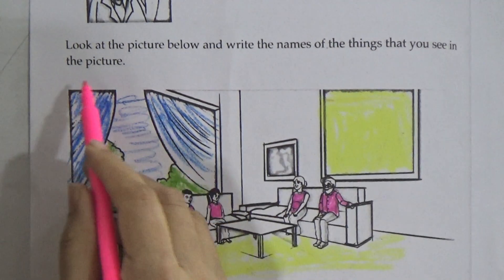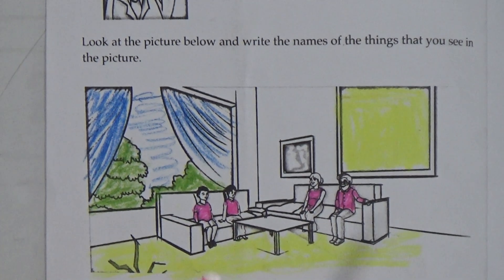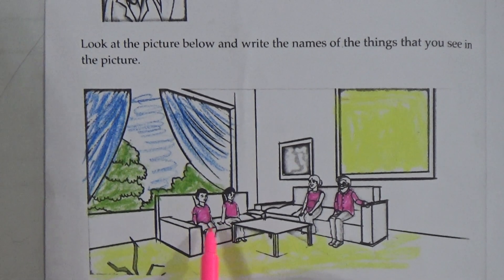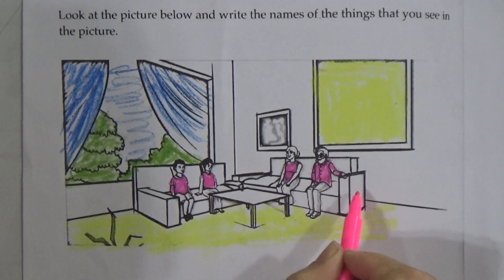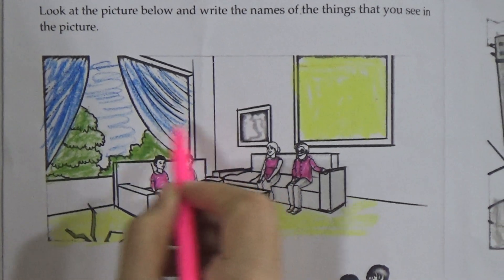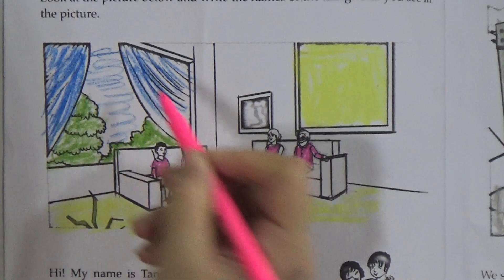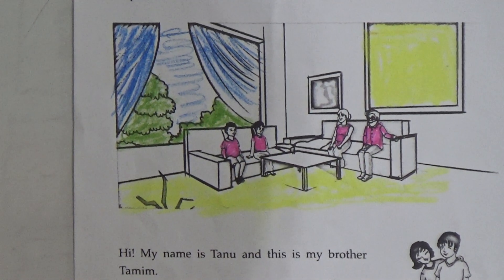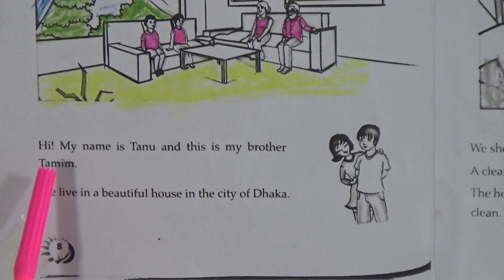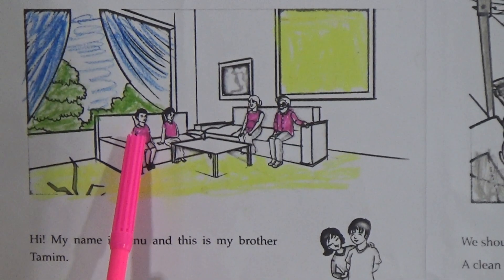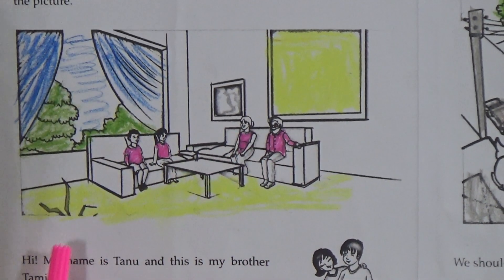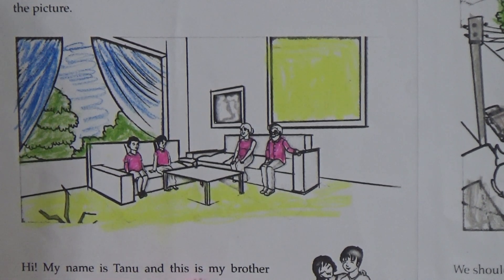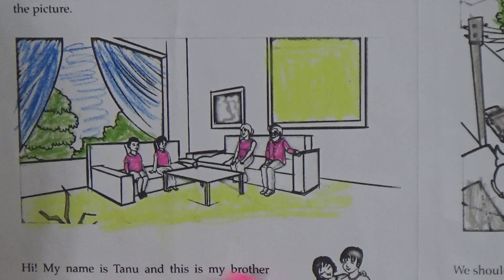Dear students, look at the picture properly. We can see there is a table, sofa, window, tree, sky, and many more things in this picture. There is also a boy, a girl, a man, and a woman. Now — 'Hi, my name is Tano and this is my brother Tami.'